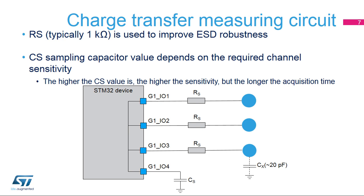First, the sampling capacitor and sensor capacitor are discharged to get a stable starting point by closing analog switch S1 and enabling S3. Between each major step, an intermediate step called dead time is inserted to avoid acquisition artifacts — consisting of opening all active analog switches and disabling all active transistors. Next, the sensor capacitor CX is charged to VDD by closing S2. After the dead time, a portion of the charge accumulated in CX is transferred into the sampling capacitor CS by closing analog switch S1.